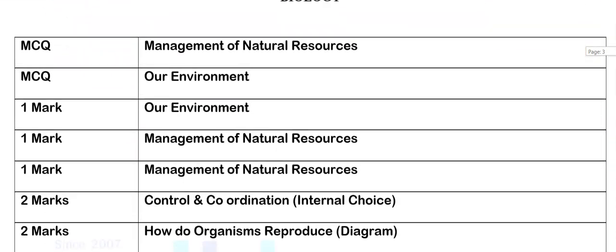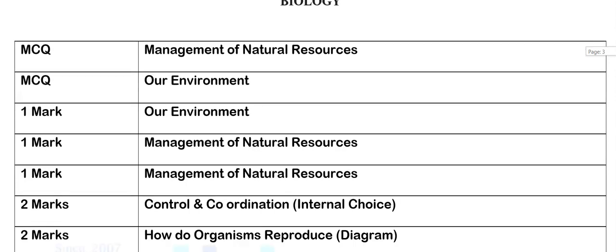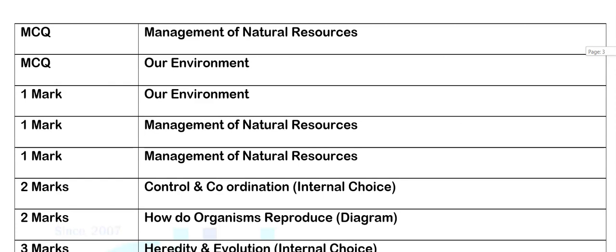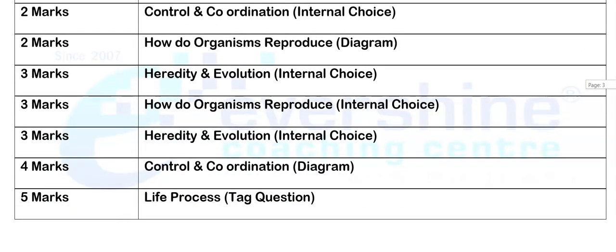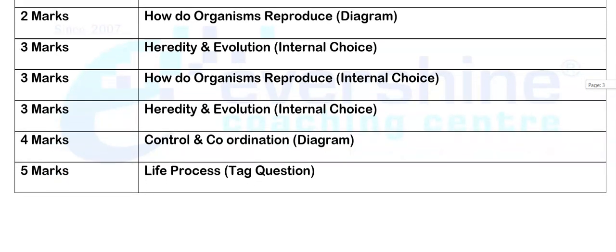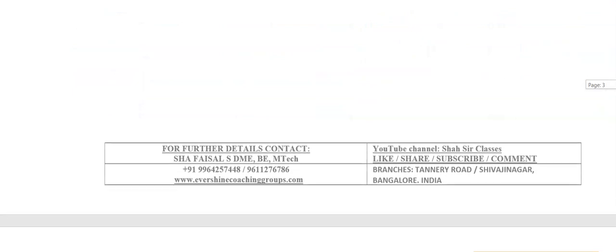Coming back to the biology part: the MCQ questions are from management of natural resources and our environment. The 1-mark questions are from our environment and management of natural resources. The 2-mark is from control and coordination — with an internal choice, out of 2 you answer any one. Another 2-mark is from how do organisms reproduce, with a diagram. The 3-mark is from heredity and evolution — internal choice. Another 3-mark is from how do organisms reproduce — internal choice. And 3-mark from heredity and evolution — internal choice. The 4-mark is from control and coordination as a diagram. The 5-mark is from the chapter life processes, with a tag question.